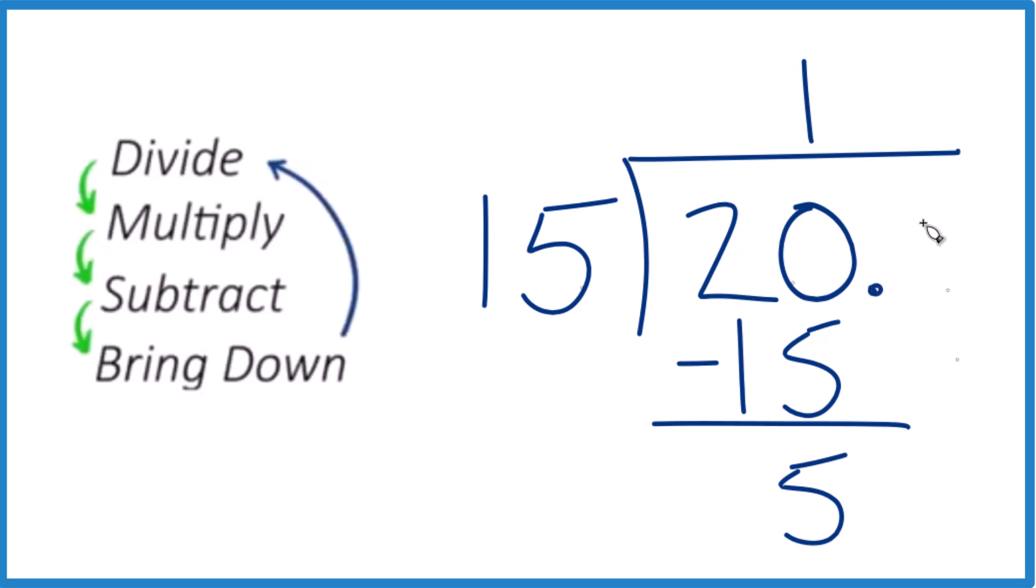So at this point, let's put a decimal point and then a 0. It's still 20. It's 20.0. It still equals 20. We put our decimal point up here.